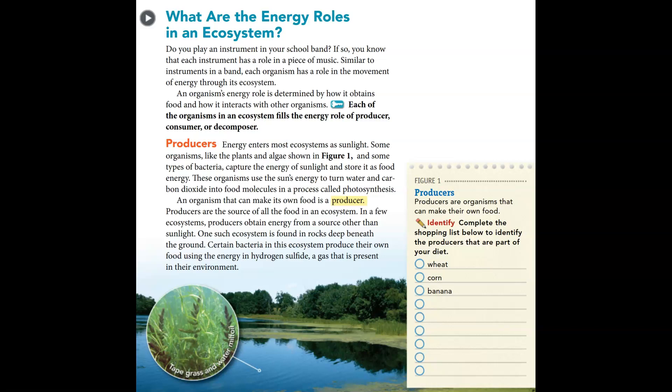In a few ecosystems, producers obtain energy from a source other than sunlight. One such ecosystem is found in rocks deep beneath the ground. Certain bacteria produce their own food using the energy in hydrogen sulfide, a gas present in their environment. Figure one shows producers like tape grass and water milfoil. Complete the shopping list to identify producers in your diet — they've given us wheat, corn, and bananas. Along those same lines, perhaps lettuce, oranges, apples, or rice — those count.